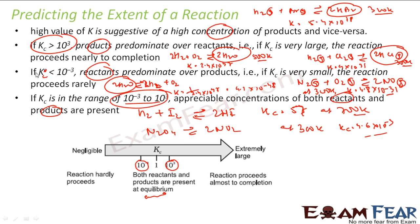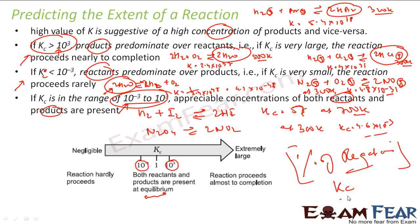The key point is: just by looking at the value of Kc, I can tell how much of the reaction will happen. If Kc is very high, you can say 99% of the reaction will happen — for example, 99% of hydrogen and oxygen will form water. If Kc is very small, only one or two percent of the reaction will happen. If Kc is in the appreciable range of 10⁻³ to 10³, about 40 to 50 percent of the reactants will react to form product. This gives us the percentage of reaction from the value of Kc or Kp.